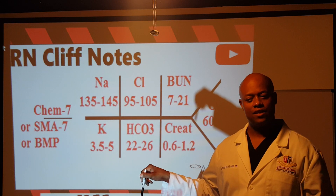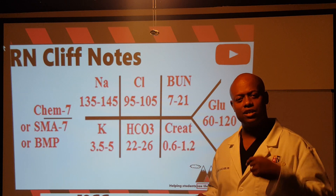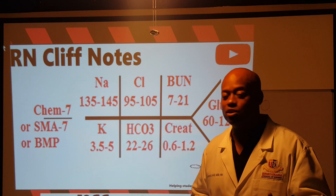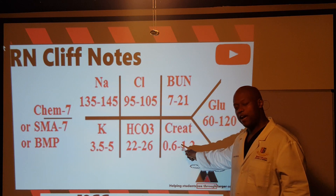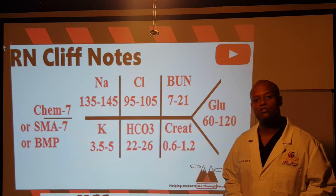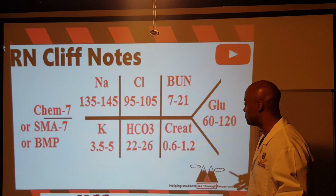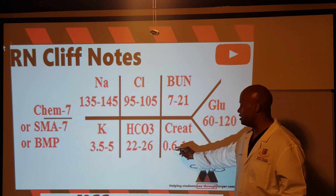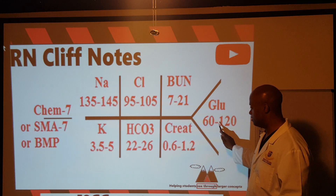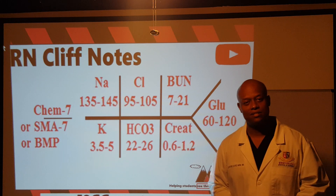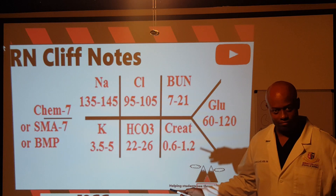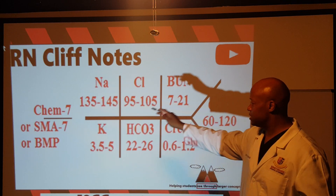Conveniently, as we start to talk about glucose, notice that the numbers between creatinine and glucose look very much alike — just off by a couple of decimal places. Glucose follows a similar pattern but starts at 60, and if we double that 60 we get 120. So your glucose range is 60 to 120. And there you have your basic breakdown of the CHEM-7.